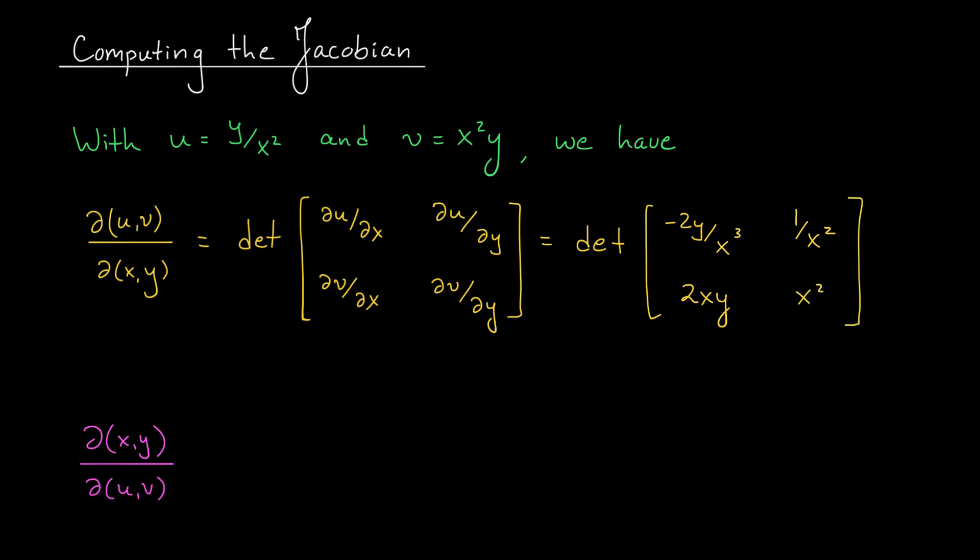Evaluating this determinant, we find that our inverse Jacobian is given by minus 2y over x minus 2y over x. That's minus 4y over x. Okay, great. Our actual Jacobian, partial xy over partial uv, is going to be the reciprocal of this expression. 1 over partial uv over partial xy. That's minus x over 4y.